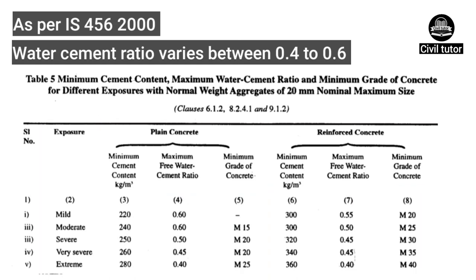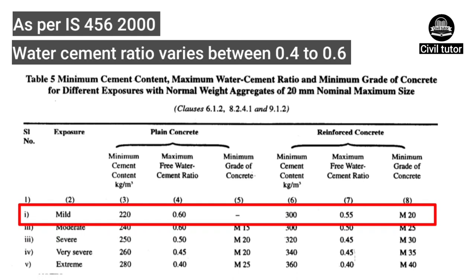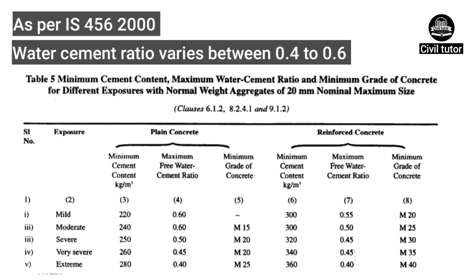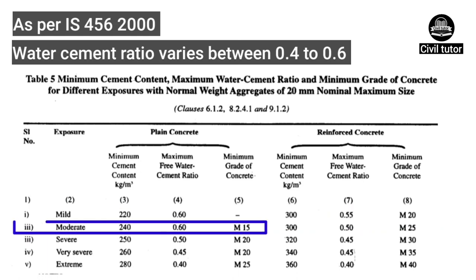For example, if we need to calculate the water cement ratio for M20 grade of concrete under mild conditions, its value will be 0.55 as per the table. Similarly, if we need to calculate the water cement ratio for M15 grade of plain concrete under moderate conditions, its value will be 0.60 as per the table.